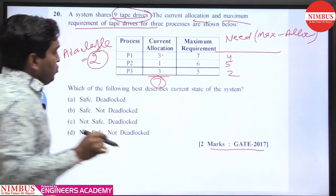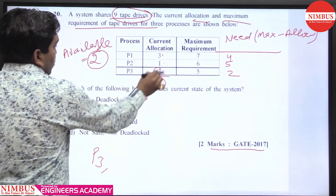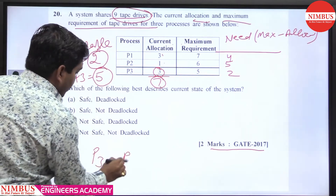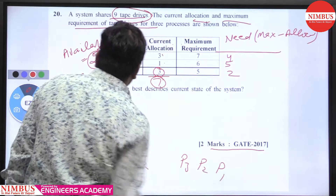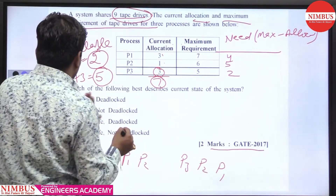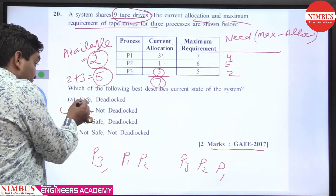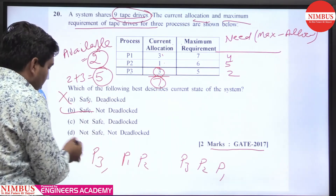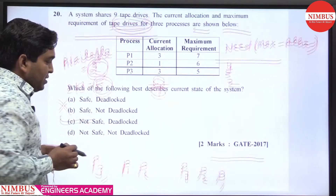From the 2 available resources, we can first satisfy P3. After P3 finishes, available becomes 2 plus 3 equals 5. From 5, we can satisfy either P1 then P2, or P2 then P1. So the system is in a safe state with no deadlock. The answer is option B: safe and no deadlock.